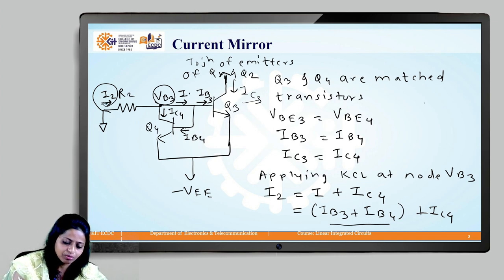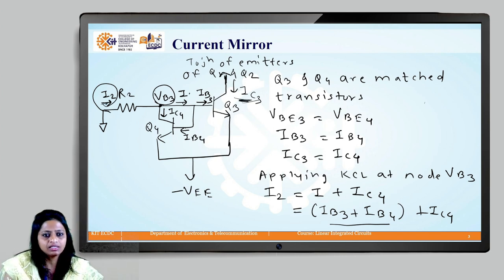Here I2 has been replicated as IC3 in this particular circuit.